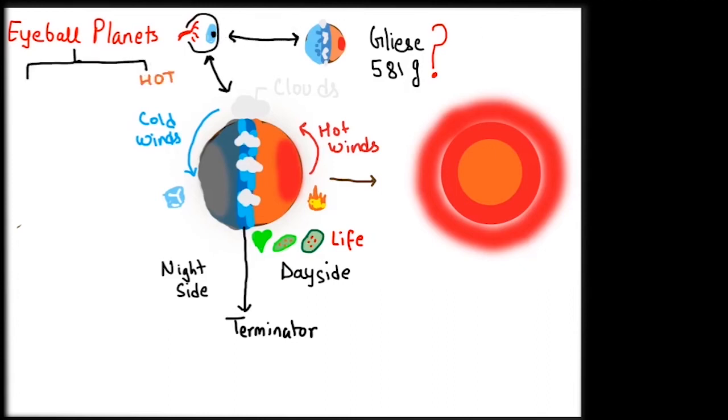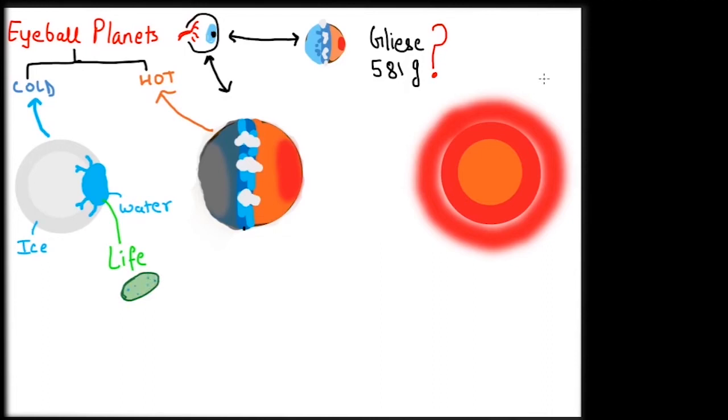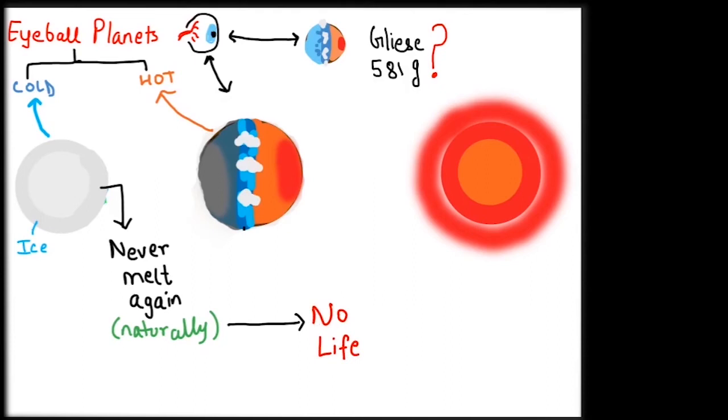Eyeball planets can be hot or cold type. The above was more of an example of a hot eyeball planet. In a cold eyeball planet, it will be tidally locked but a bit farther away from the star, such that the whole planet will be frozen except for the part of the face facing directly towards the star and receiving constant heat. In this case, life-supporting conditions will exist on the hot side with liquid water. But if this water ever freezes, it will never naturally melt since more energy is required to melt ice. Eyeball planets would be a very strange place to visit.